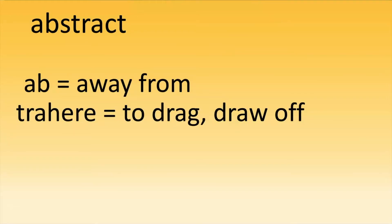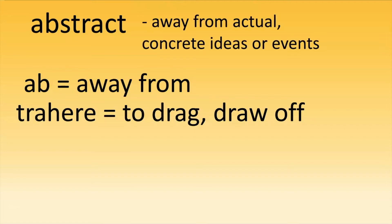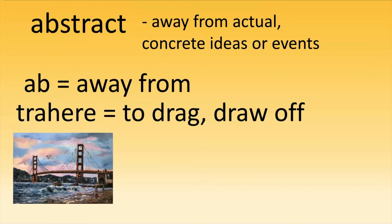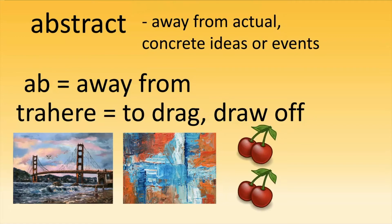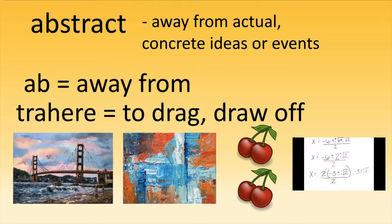Next we have 'abstract' — I think we know this word. It comes from 'trahere,' which means to drag off, so it means away from actual concrete ideas or events. We know this in art: a painting of a bridge is concrete, whereas another painting is more abstract. This idea of abstract can also exist in math. If you have two cherries and add two cherries, you now have four cherries — that's very concrete. Whereas dealing with imaginary numbers is more of an abstract mathematical concept.